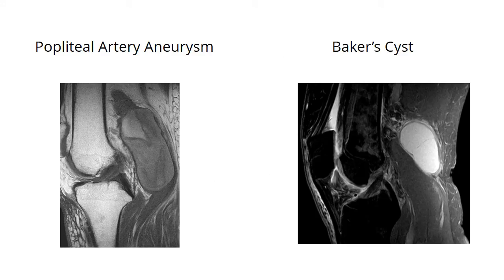The most common problem with the popliteal fossa is the appearance of a swelling or a mass. One possible cause of this is an aneurysm of the popliteal artery, where the wall of the artery becomes weak and the lumen dilates. A popliteal artery aneurysm can compress the tibial nerve, producing sensory and motor deficits in the lower leg.